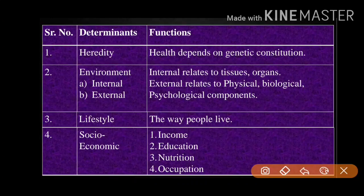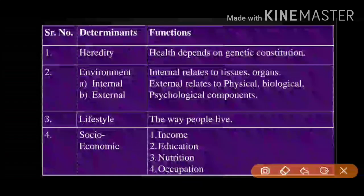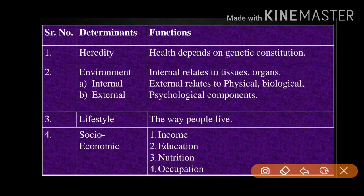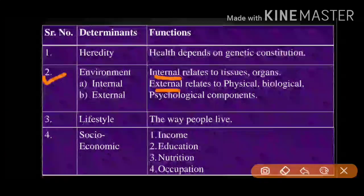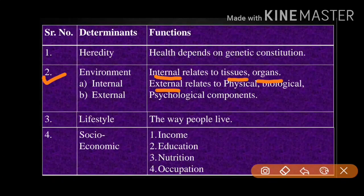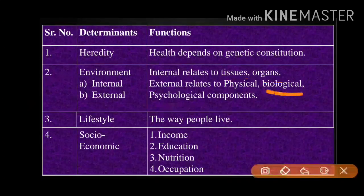Genes determine the health of an individual from the moment of conception. We cannot alter our genetic makeup. Some diseases are genetically inherited, so those health issues cannot be changed. The second determinant is environment, which can be internal or external. Internal environment relates to your own body — tissues and organs. External environment relates to physical, biological, and psychological components.